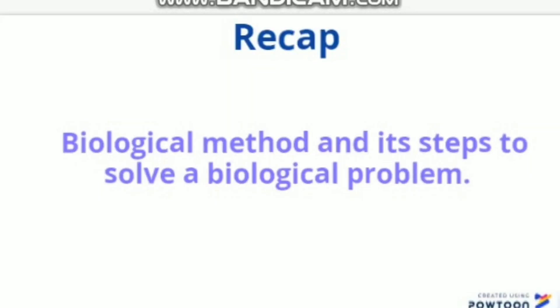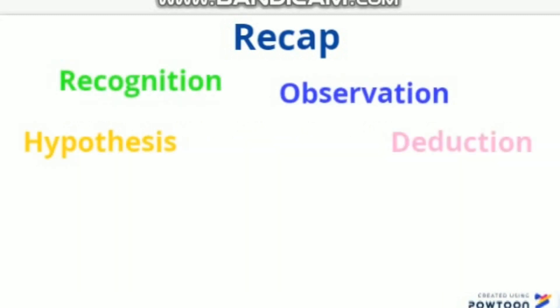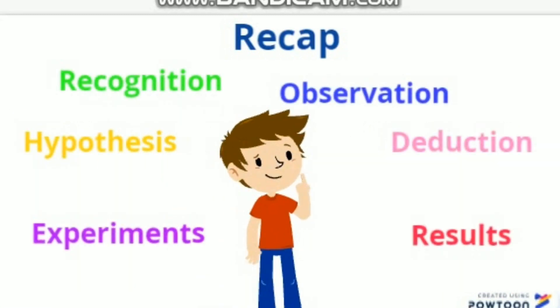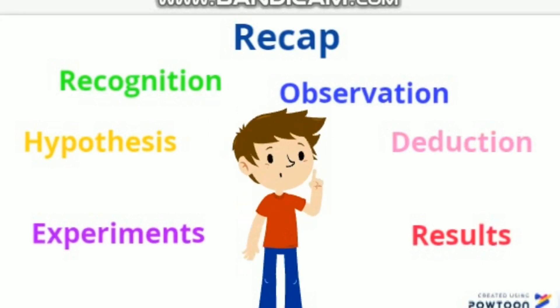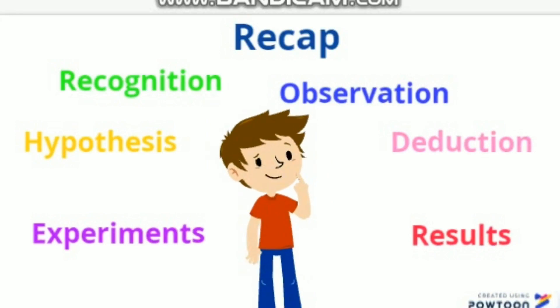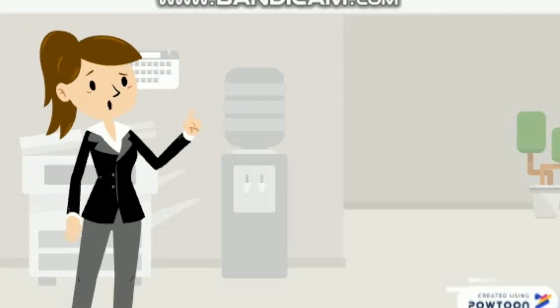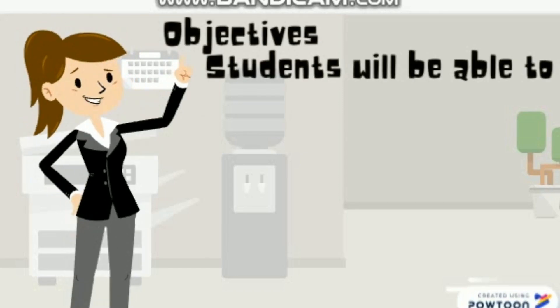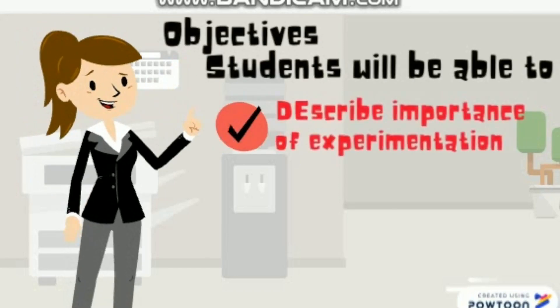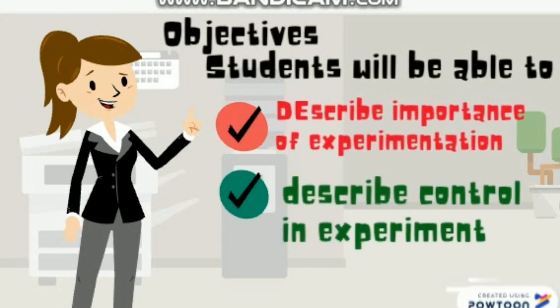Let's have a recap. We have studied about the biological method and its steps to solve the biological problem, then we saw an example of Tim and how Tim used all these steps. Till now we have studied recognition, observation, hypothesis, and deduction in detail. Now we are going to see the remaining steps. Our objectives are: students will be able to describe the importance of experimentation and describe control in an experiment.